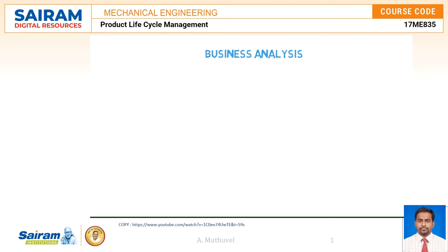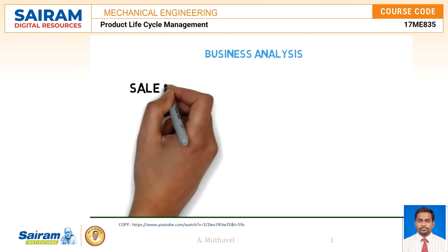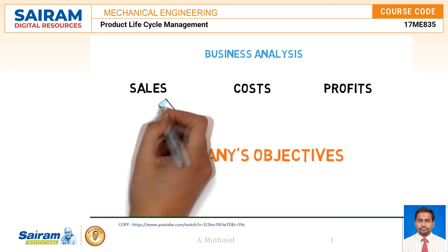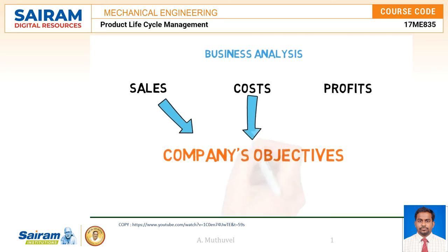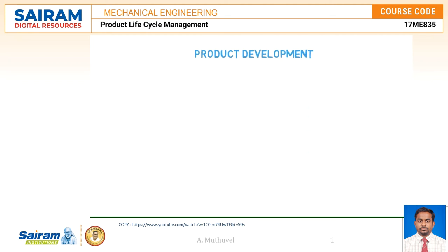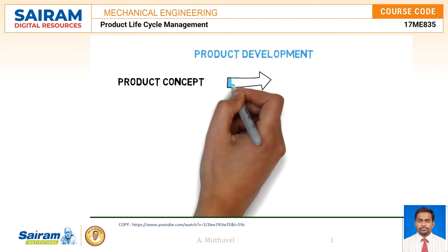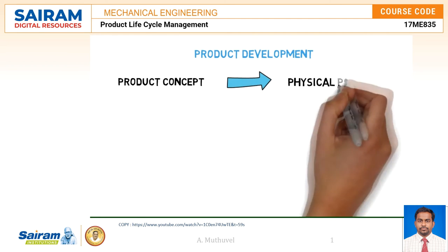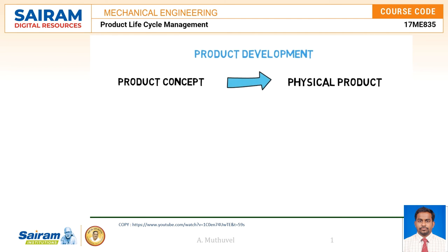Once a company has decided on the product concept, it can evaluate the business attractiveness of the proposed new product. This stage involves a review of sales, cost, and profit projections for the new product to find out whether these factors satisfy the company's objectives. If they do, the product can be moved to the product development stage.